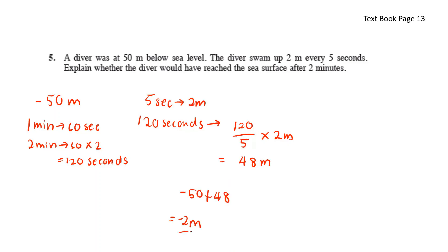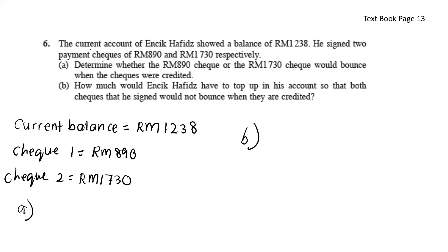Encik Hafidz has a current account balance of RM1,238. He signed two payment cheques of RM890 and RM1,730. RM890 is within the balance, but the RM1,730 cheque would bounce as it exceeds the balance. So the answer for part A is the RM1,730 cheque.